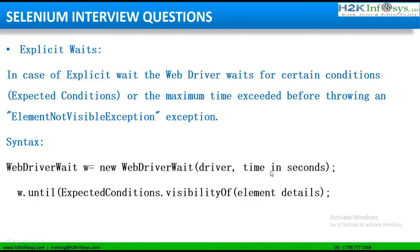If the maximum time is exceeded and the condition is not satisfied — that is, the element is not visible — then we will get an exception and the script will fail with an exception such as 'element not visible' or 'element not found.' Remember, in explicit wait we make use of expected conditions and maximum time. We make use of the until method and the class ExpectedConditions in explicit wait.